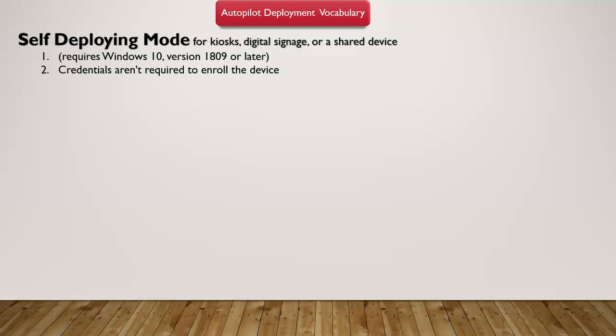The first word would be the self-deploying mode. This is one of the options available within Autopilot. When creating an Autopilot profile — a profile that consists of some of the out-of-box experience specific settings — there is a specific setting called self-deploying mode. That means it doesn't require you to enter any username or password to enroll that specific device in Microsoft Intune.